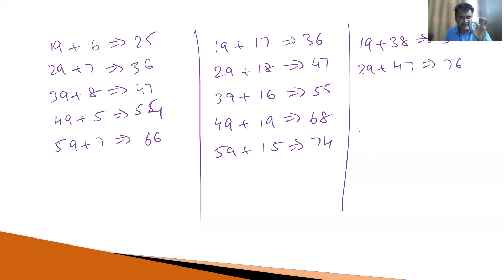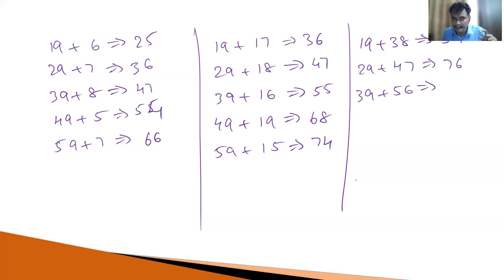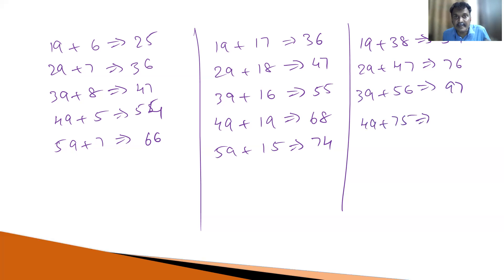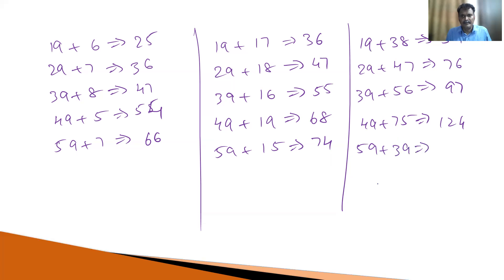If you observe, I never add 9 plus 7 and carry that carry — 1 plus 2 plus 4 and so on. Just convert this number into the nearest rounded number and then add. Suppose 39 plus 56: 39 becomes 40. 40 plus 56 is 96. Minus 1 — 95 is the answer. Suppose 49 plus 75: 49 becomes 50. 50 plus 75 is 125. Minus 1 — 124 is the answer. Suppose 59 plus 39: 59 becomes 60. 60 plus 39 is 99. Minus 1, that is equal to 98, which is the required answer.